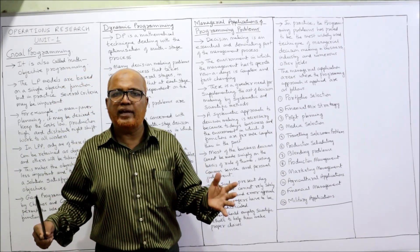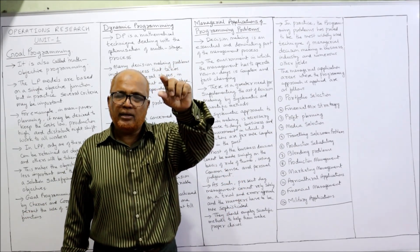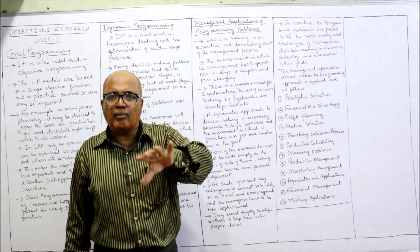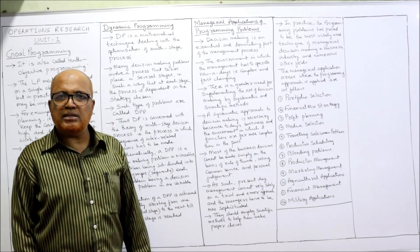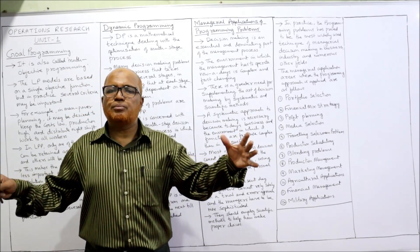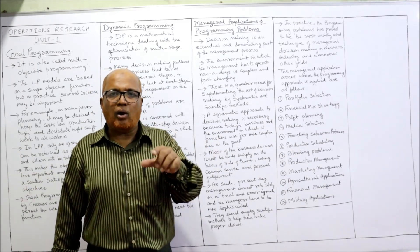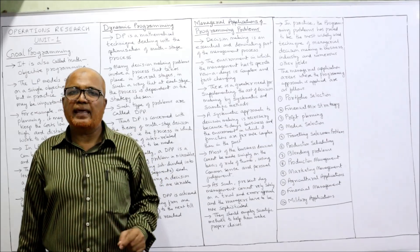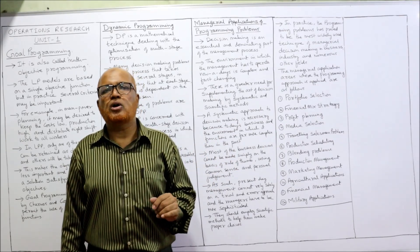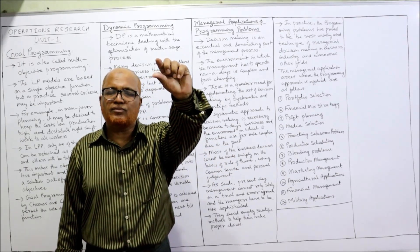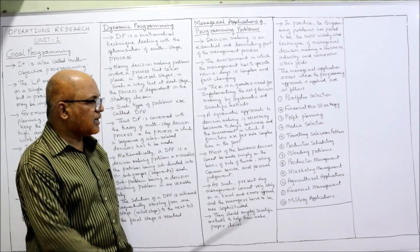Production management involves attaining a particular objective using a number of resources through programming methods. Marketing management is concerned with the distribution of goods to different markets and media selection, all of which require programming problems to attain a given objective using certain resources.